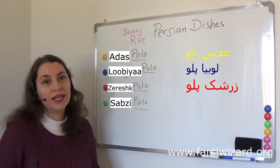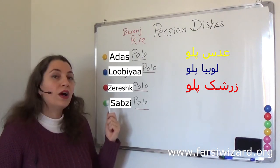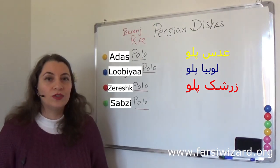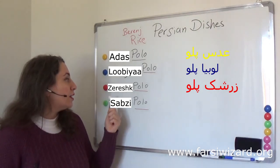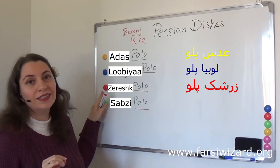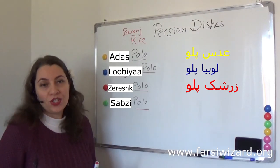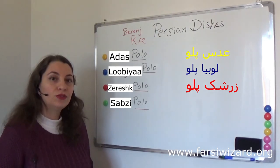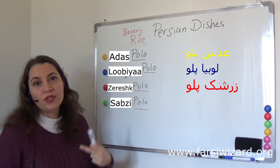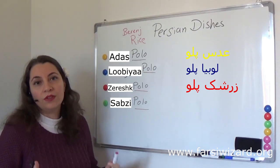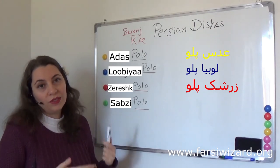Then we have zereshk. What is zereshk? Zereshk refers to barberries. Barberries are not really common in many parts of the world — it's a very small, tiny fruit, red in color, which is why I have put this red thing here for you. Zereshk is very popular in Iran; there are jams and different side dishes made with it. So zereshk polo is barberry rice.